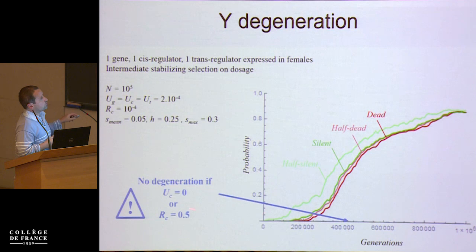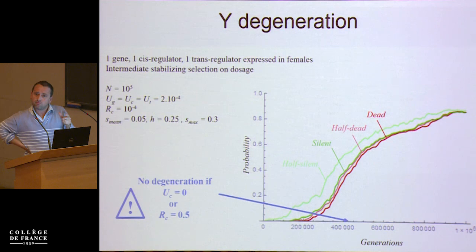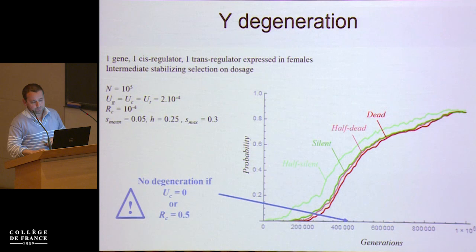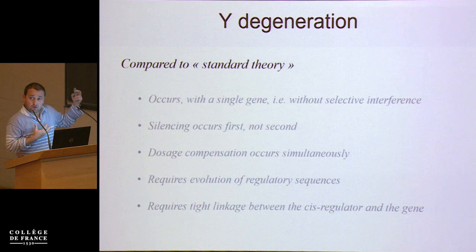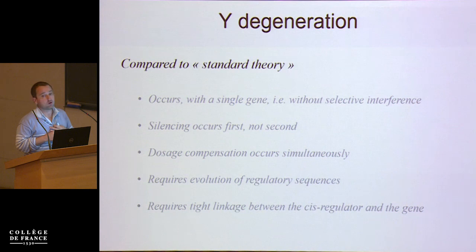There are two very important controls for this kind of simulation. The first is that when you set the mutation rate of the cis regulator to zero, nothing happens. And more interestingly, if you set the recombination rate between the cis regulator and the gene to 0.5 — meaning they are unlinked in females — then nothing happens. So the conclusions are: compared to standard theory, you can have Y degeneration with a single gene without much selective interference, silencing occurs first not second, and dosage compensation occurs simultaneously. It requires the evolution of regulatory sequences and tight linkage between the cis regulator and the gene in females.